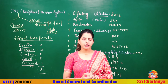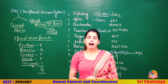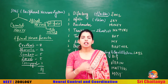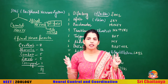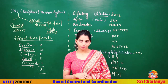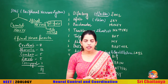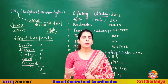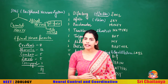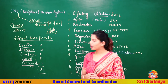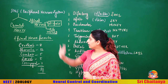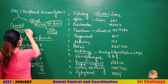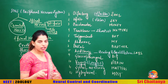Since we are done with the central nervous system — the brain and spinal cord — we are going to talk about all the nerves that arise from your cranium, called cranial nerves, and all the nerves from the spinal cord, called spinal nerves. All these are part of the peripheral nervous system. This part is not clearly detailed in NCERT, but there is a probability of questions, so it should not be zero.